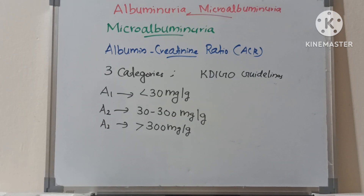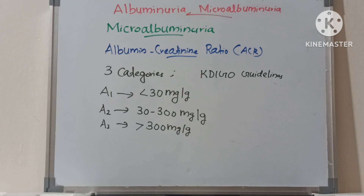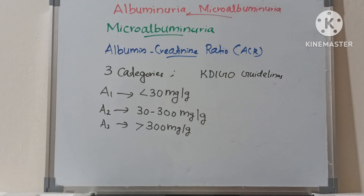There are three categories of albumin-creatinine ratio as per Kidney Disease Improving Global Outcomes (KDIGO) guidelines. Category A1 represents normal to mildly increased ACR, that is less than 30 mg per gram. Category A2 represents moderately increased ACR of 30 to 300 mg per gram, which is microalbuminuria. Category A3 represents severely increased ACR of more than 300 mg per gram. If the ACR is found to be moderately increased, the doctor will ask to repeat the test within 3 months.